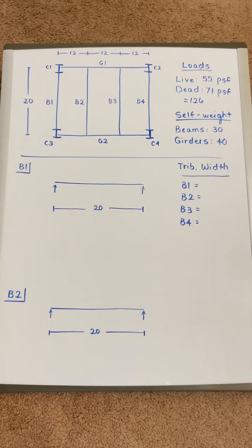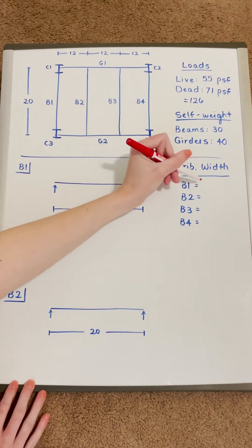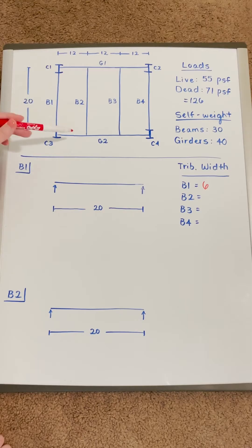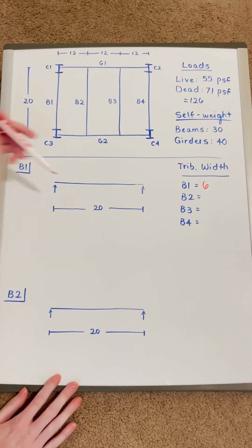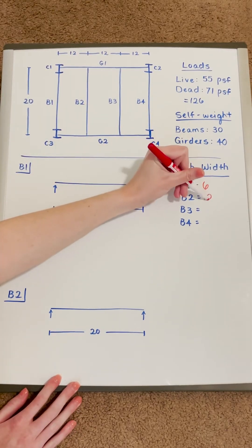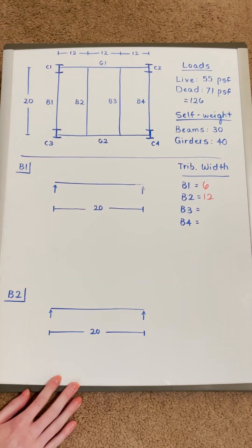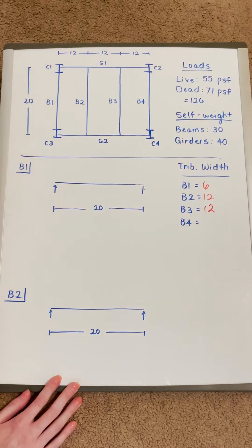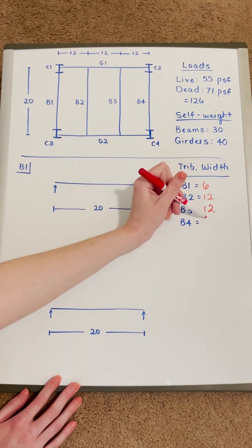Starting with B1, the first thing you do is calculate your tributary width. It's the only beam being supported by those two columns, so the tributary width is going to be half the distance to B2, which is 6 feet. For B2, it's being supported by two girders that are also supporting B3, so that's 2 times 6, which is 12. The same goes for B3 because it's exactly symmetrical to B2, so it's also 12 feet. B4 is exactly symmetrical to B1 — only two columns supporting that beam — so it's 6 feet.